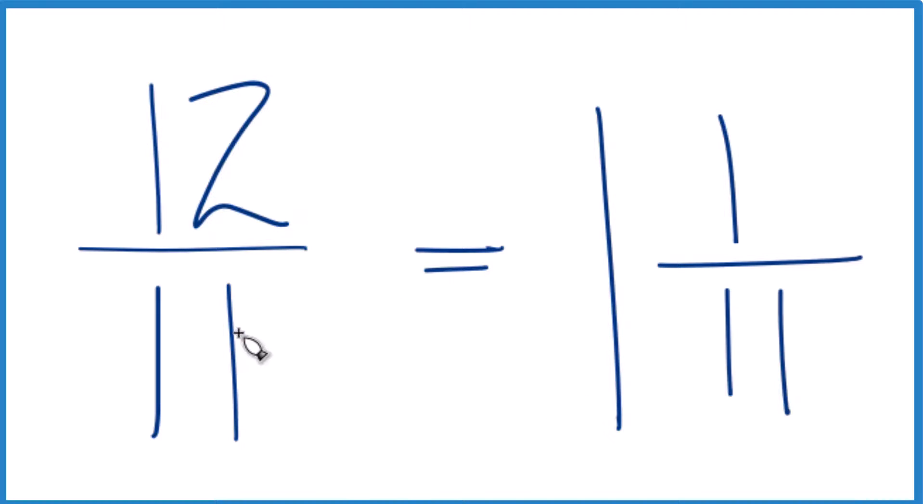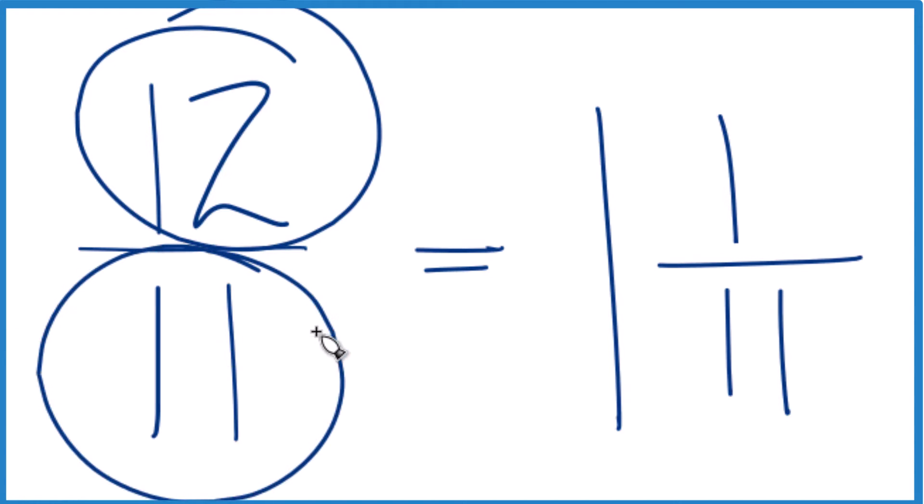The fraction 12 elevenths equals the mixed number 1 and 1 eleventh, and you can check that too. 1 times 11, that's 11. 11 plus 1, that's 12, and we just kept the denominator the same.